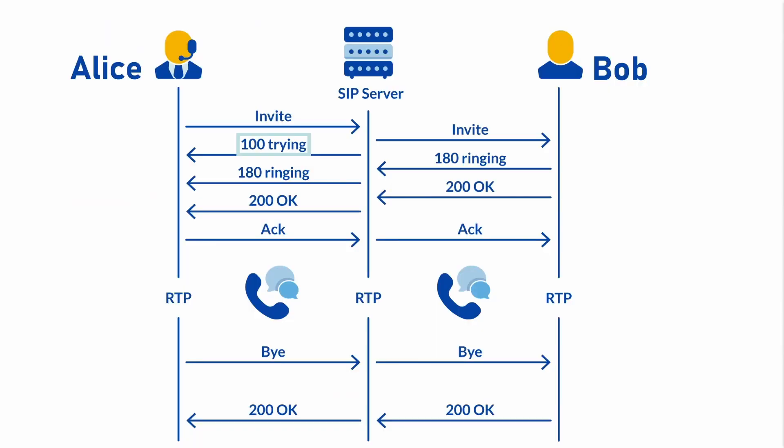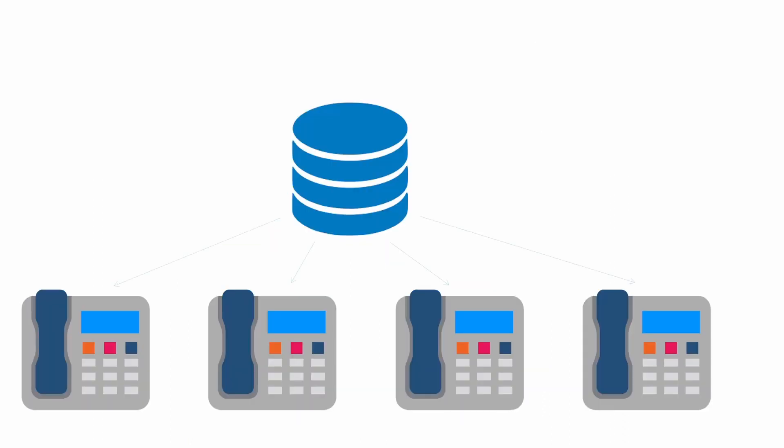The SIP server immediately responds with 100 Trying and then forwards the INVITE request to the target telephone. The SIP server adds one Via header to the message. The SIP server has access to the local database and thus knows the IP addresses of all registered telephones.